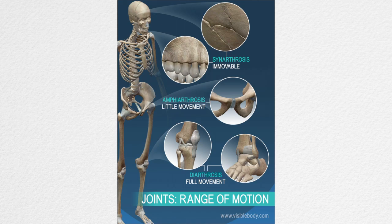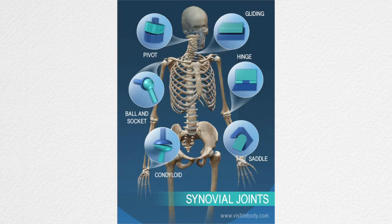Partly movable joints, also known as amphiarthrosis, allow for some range of movement between the bones. Some joints in our rib cage are amphiarthrosis. Lastly, movable joints allow for an extended and wide range of motion. We see this in our shoulders, elbows, and knees. Some common movable joints are ball and socket joints, hinge joints, gliding joints, and pivot joints.